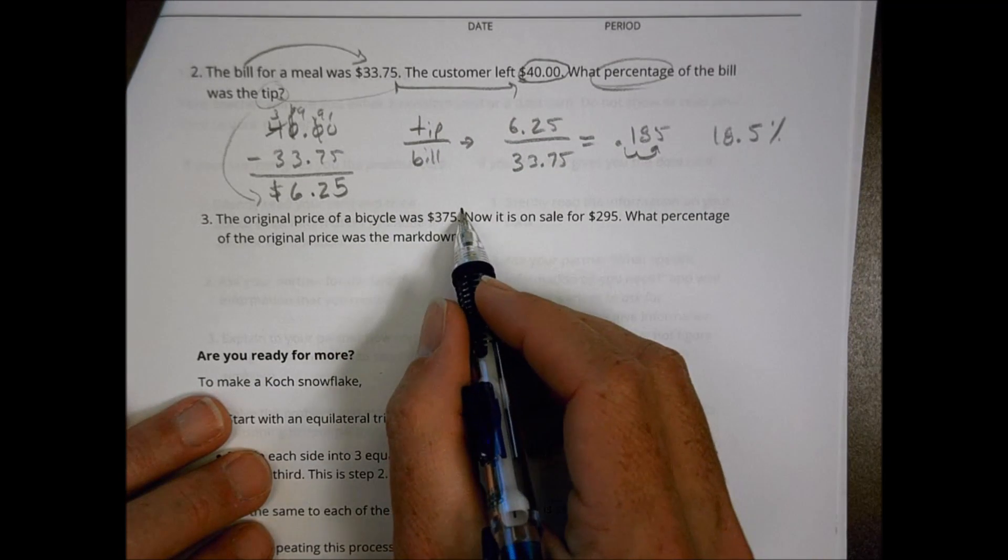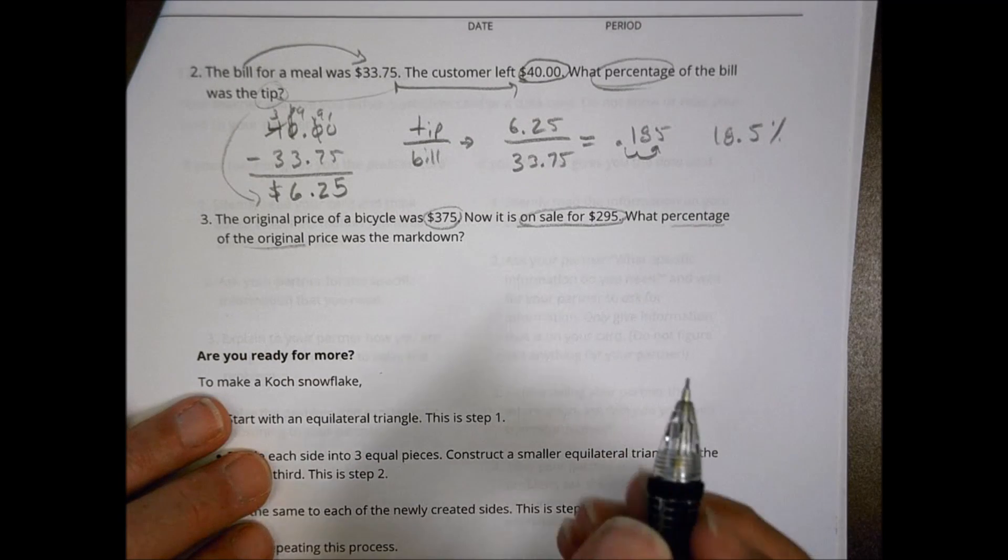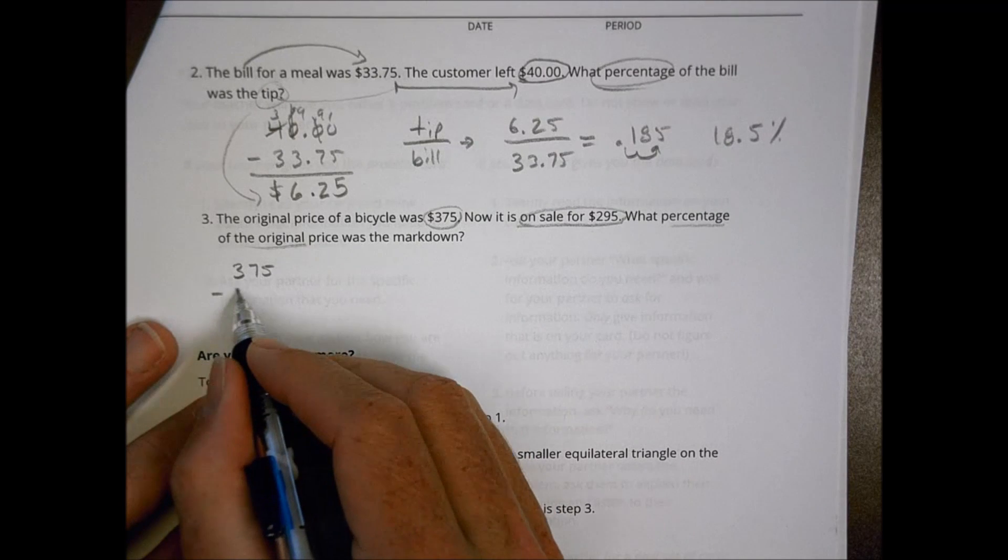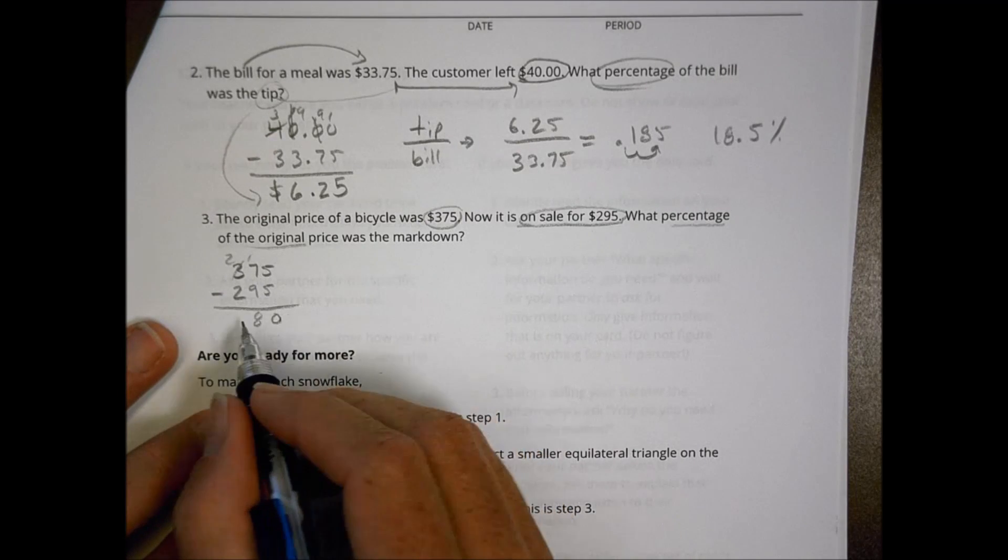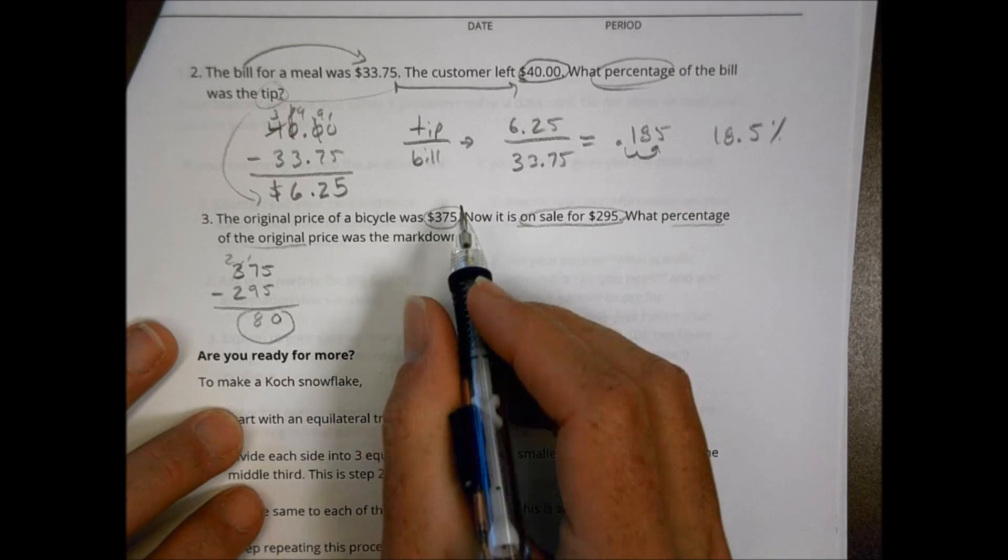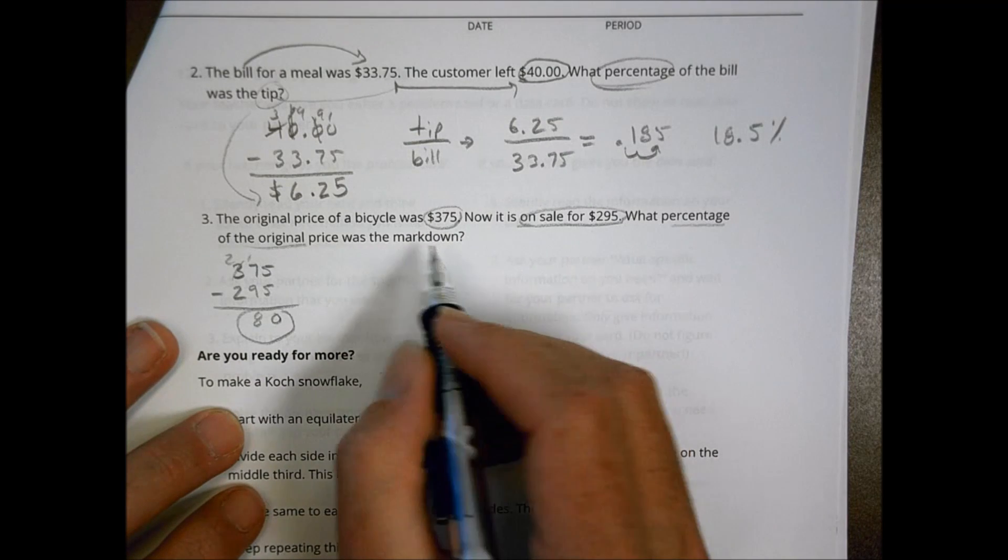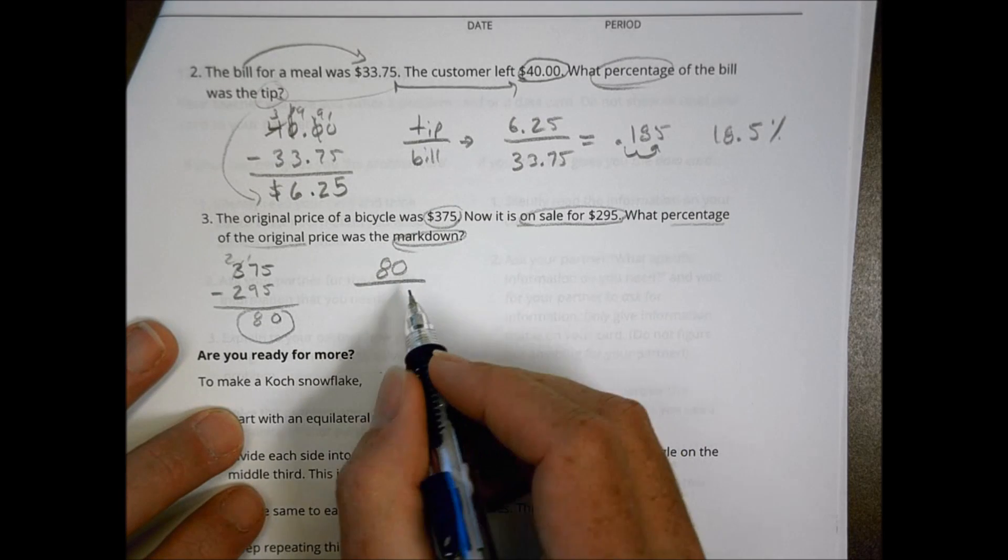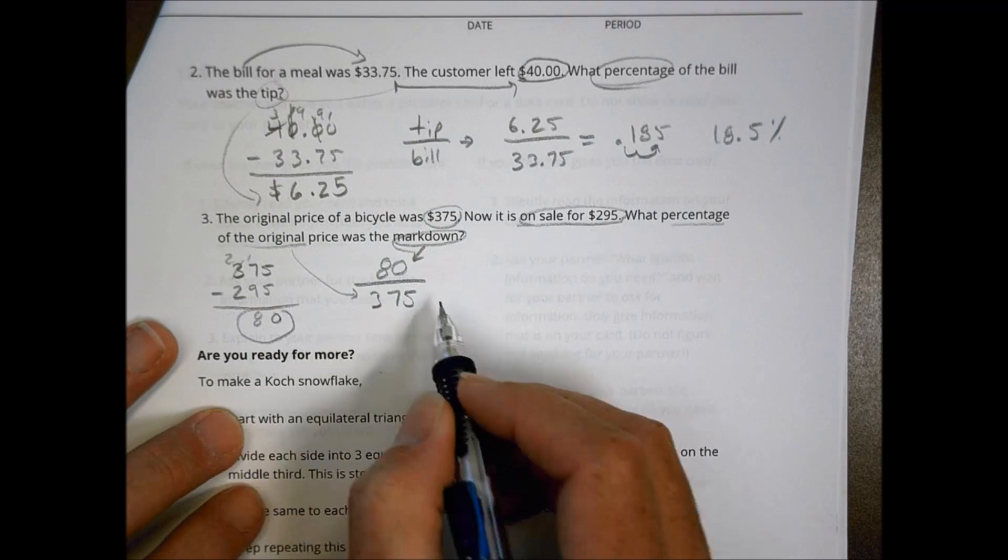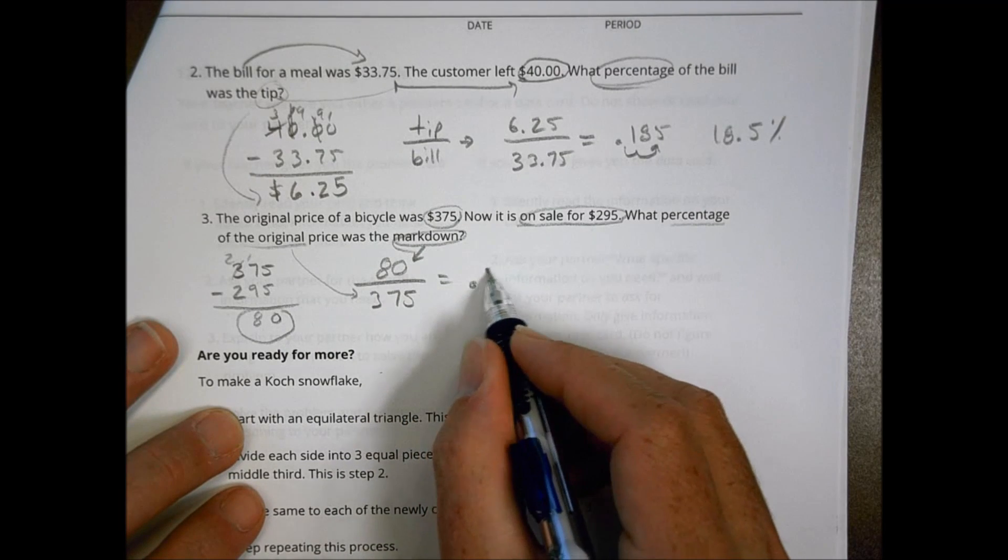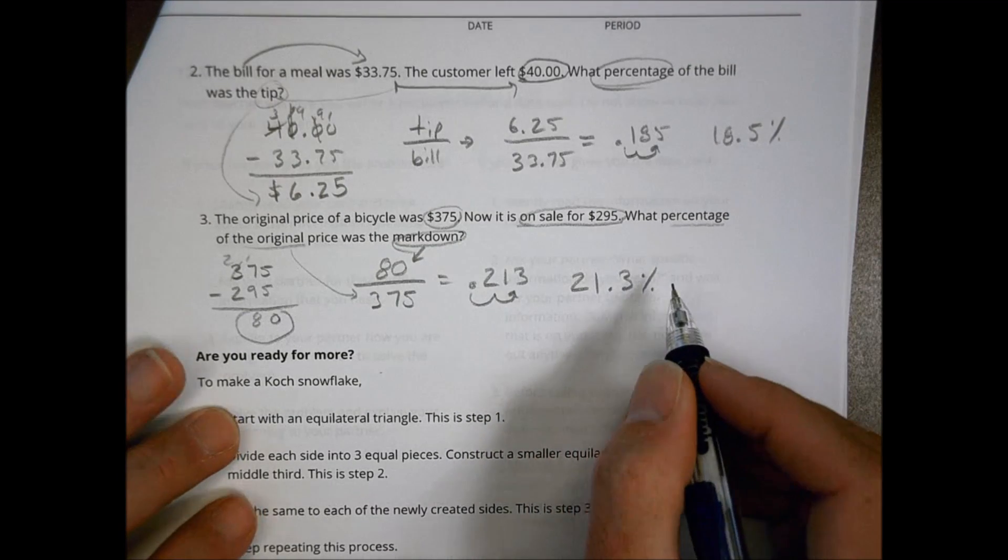The original price of the bicycle was $3.75. Now it's on sale for $2.95. What percentage of the original was the markdown? So we know we had it at $3.75, and now it became $2.95. So when we subtract this, what we discover is that there's an $80 decrease in price. The price has come down $80. And so what we're going to do is we're going to take a look at the percentage of the original. What's the markdown? The markdown was $80 off of the original, which was $3.75. That's our markdown there, and that's our original there. 80 divided by 3.75 is going to be equal to 0.213. You move this over there, two spaces, and that becomes 21.3% right there.